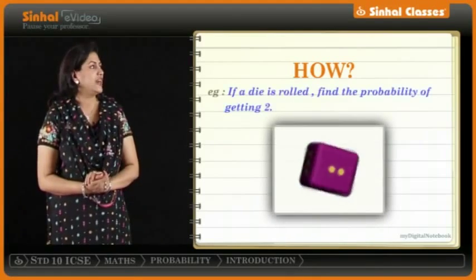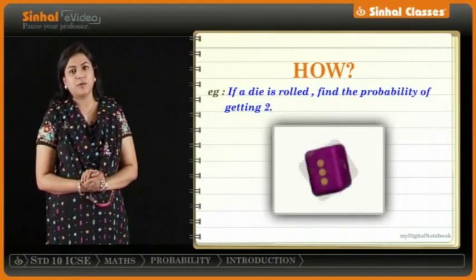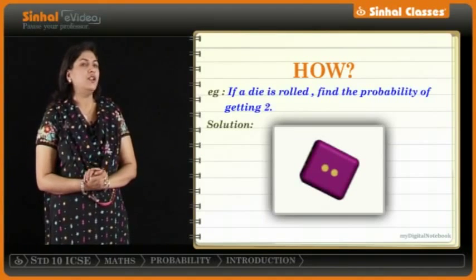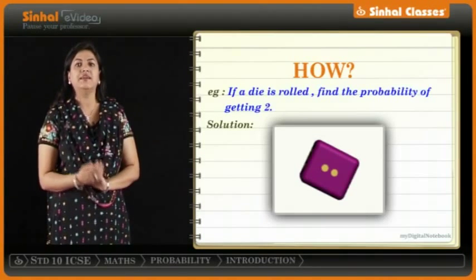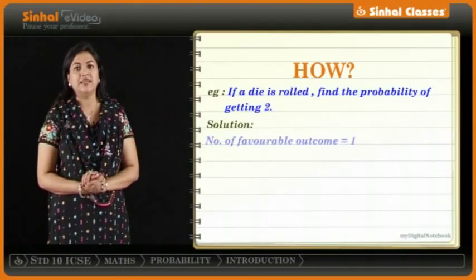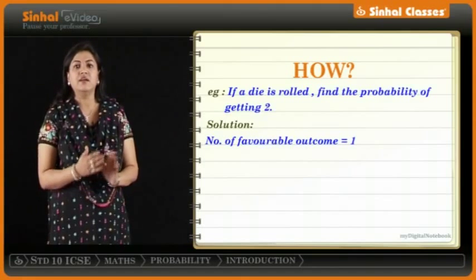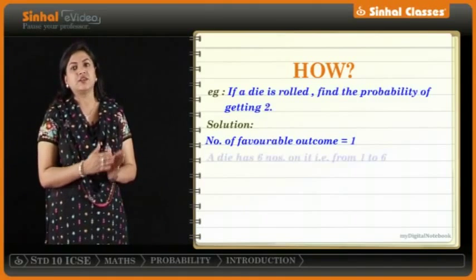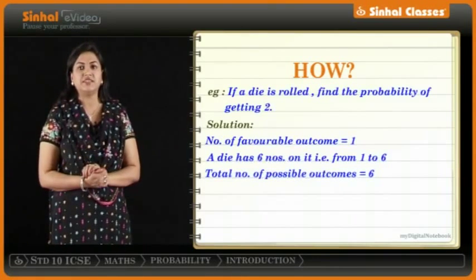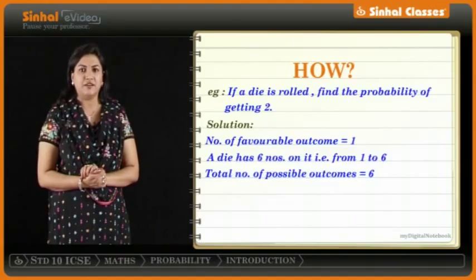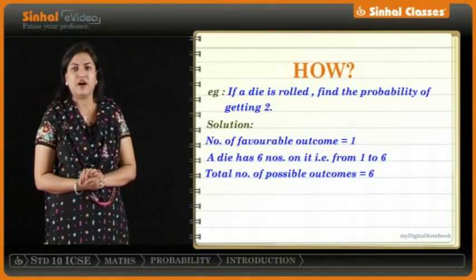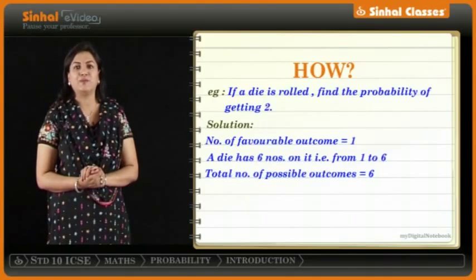Example: if a die is rolled, find the probability of getting 2 on the die. Here, the desirable or favorable outcome is getting 2 on the die — that is 1 possibility. The total number of outcomes: we can have any number from 1 to 6, so there are 6 outcomes. So, the probability of getting 2 on the die will be number of favorable outcomes upon total number of outcomes, that is 1 upon 6.